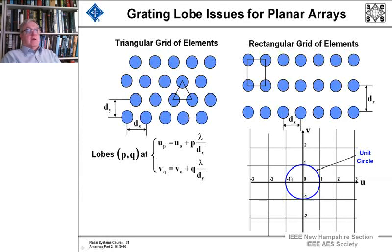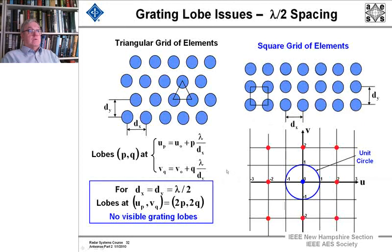inside of this circle is physical space. Outside of it, you get cosines and sines of angles greater than 1 or minus 1. The magnitude of them greater than 1 or minus 1. So this is the physical space. And our equation for the lobes, the lobes are a function of these integers. They'll appear at these integers, p and q, where they run from 0 to on out. And u0 would be the direction cosine that you're pointing in, and lambda over dx and dy are the spacing, and p's and q's are the integers.